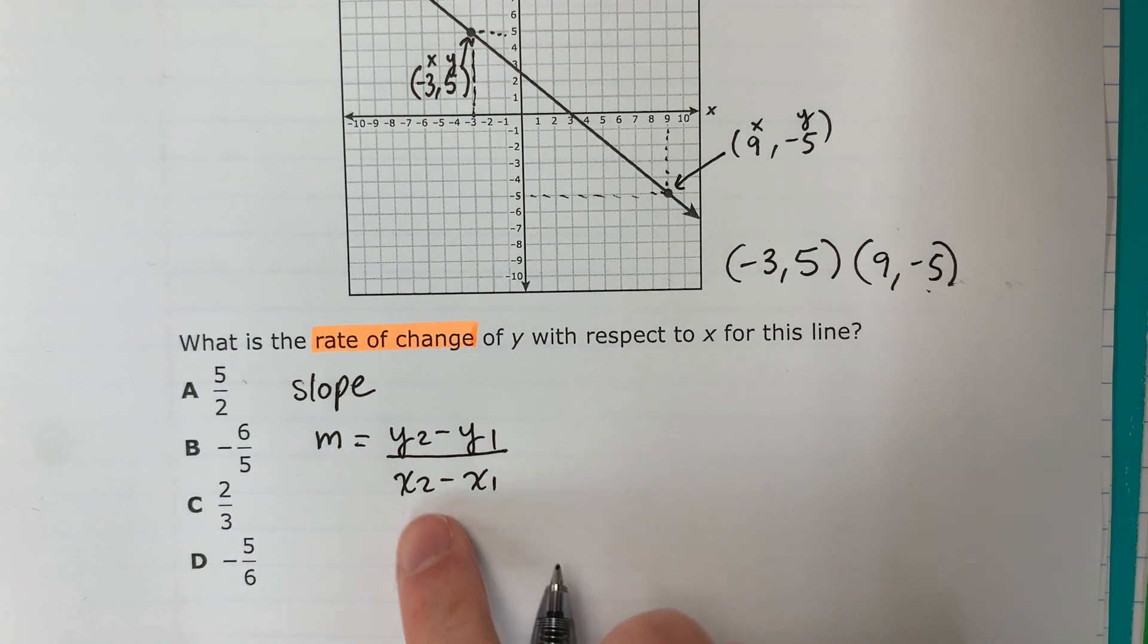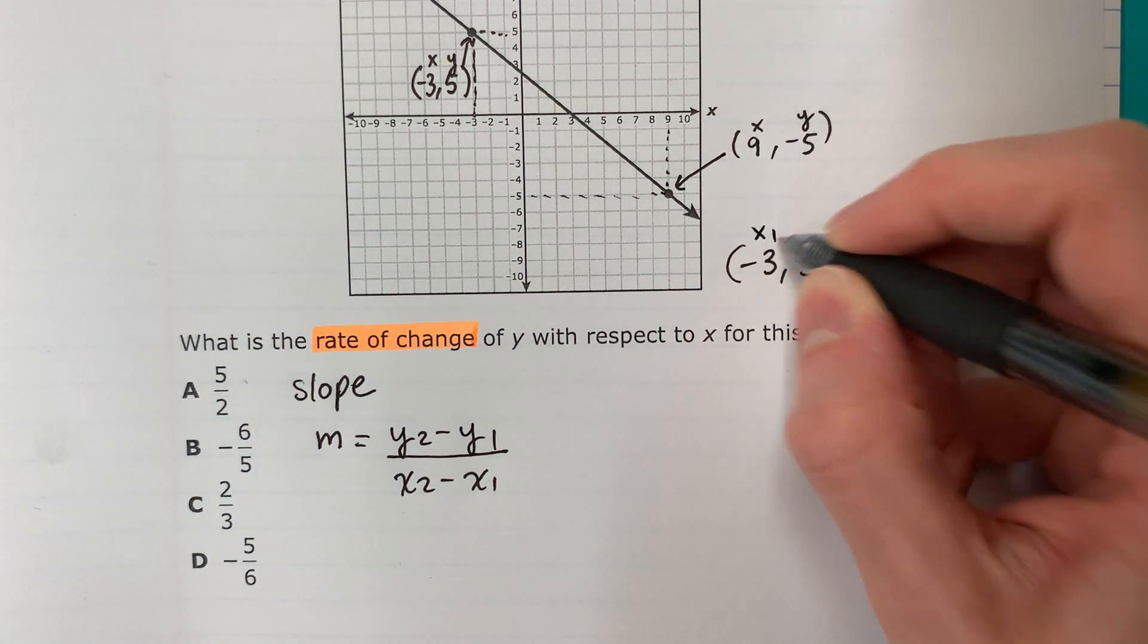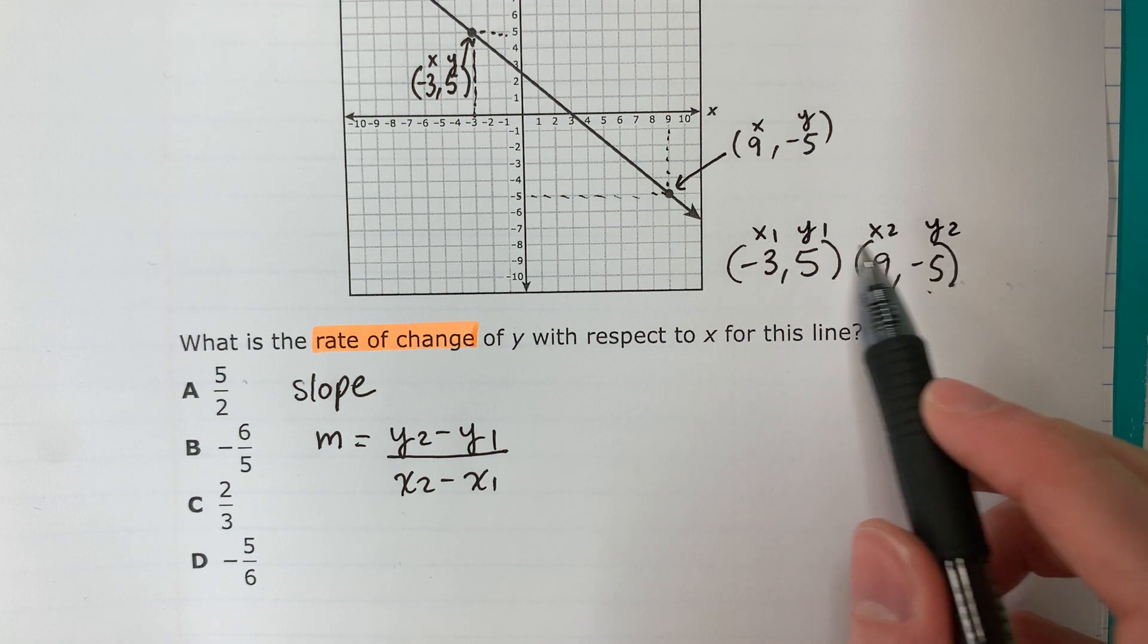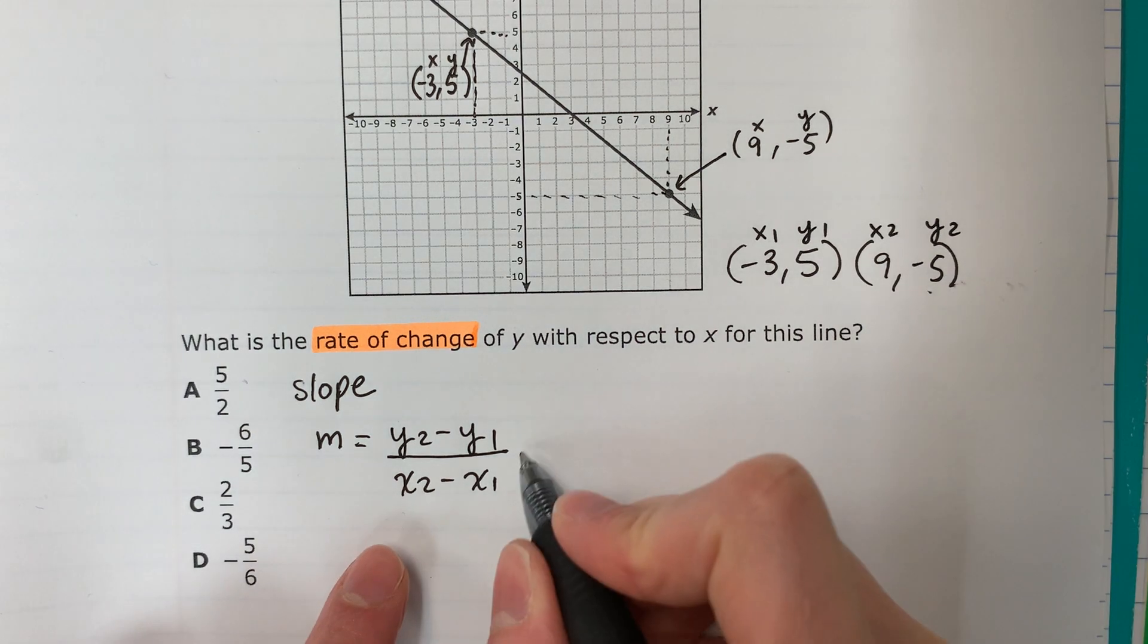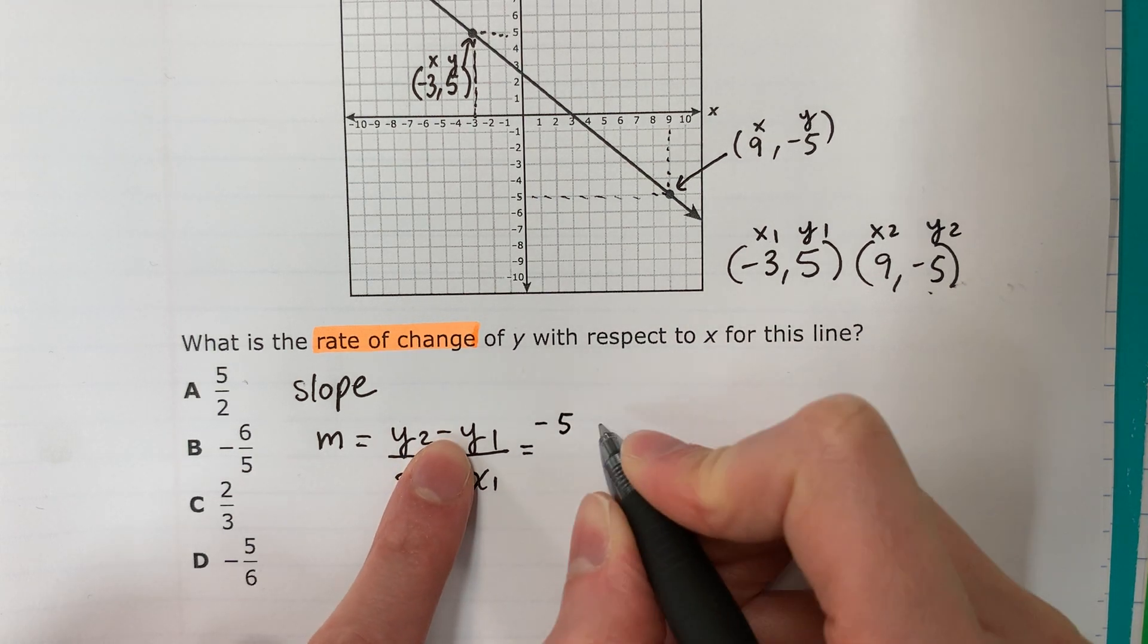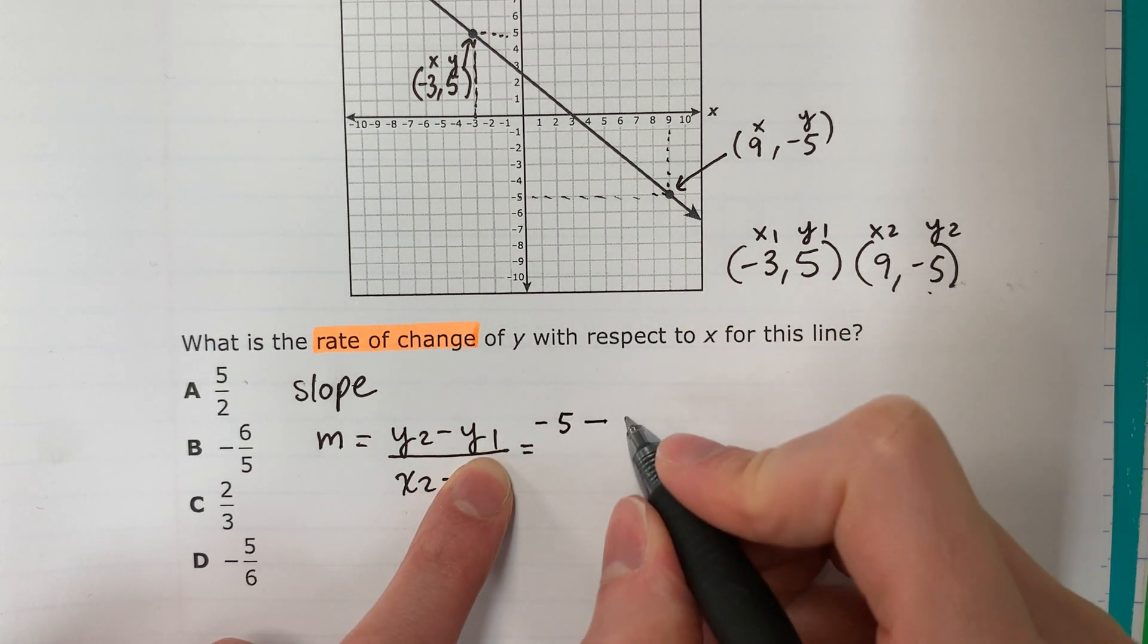So to use this formula, I need to write x1, y1, x2, y2. It's always like this, x1, y1, x2, y2. Equals y2, negative 5.